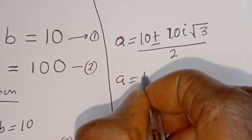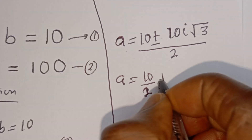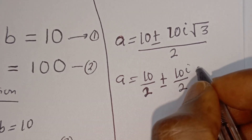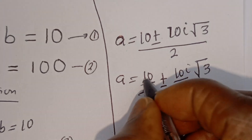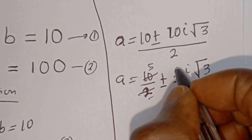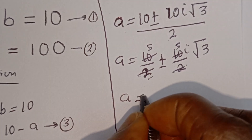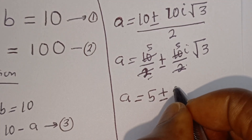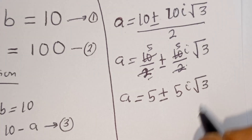We have a is equal to 10 divided by 2, plus or minus 10i divided by 2, times root 3. Then a is equal to 5 plus or minus 5i root 3.